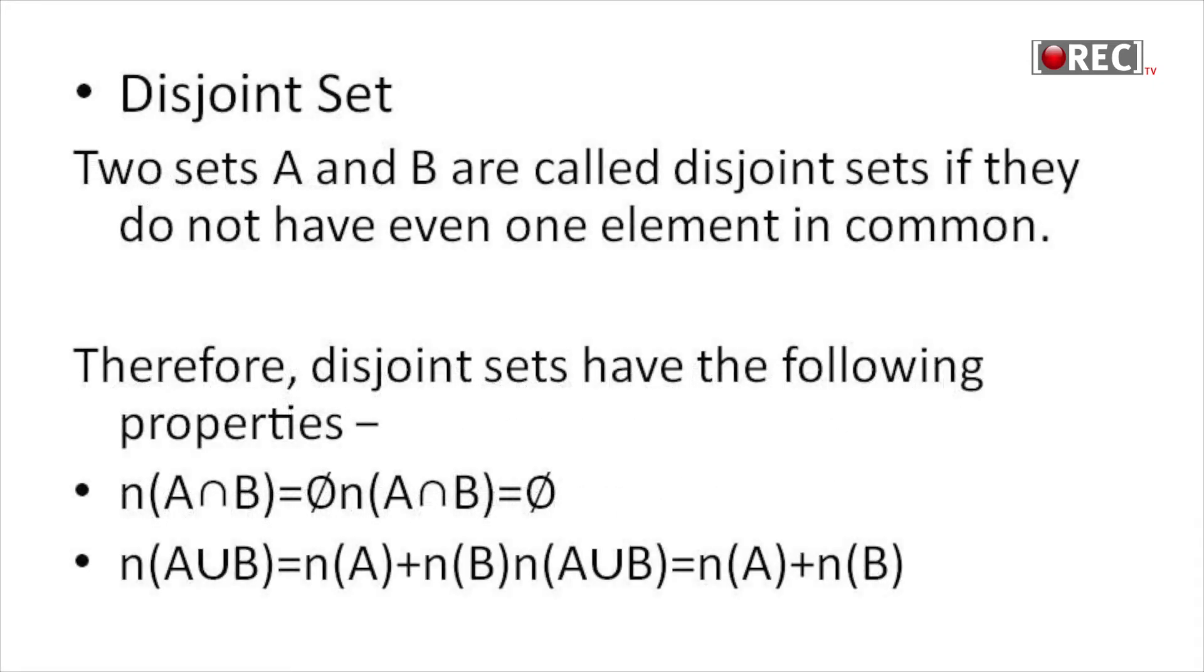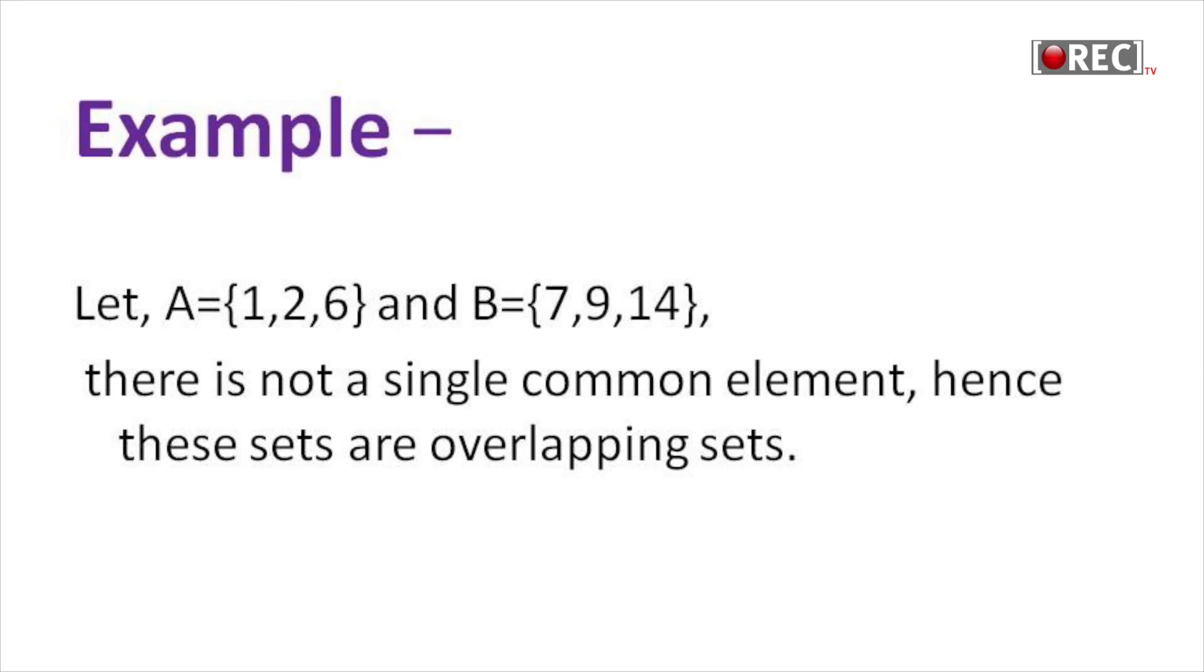Disjoint set: Sets A and B are called disjoint sets if they don't have any element in common. Disjoint sets have the following properties: N of A intersection B equals phi, and N of A union B equals N of A plus N of B. For example, let A equals 1, 2, 6 and B equals 7, 9, 14. There is not a single common element, hence these sets are disjoint sets.